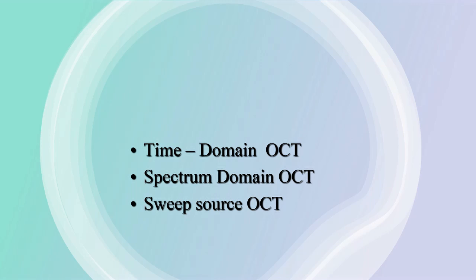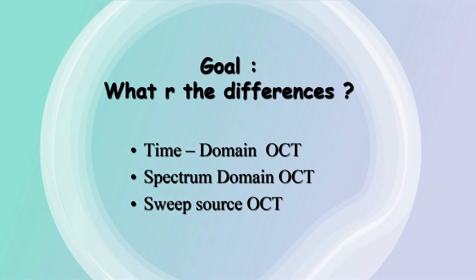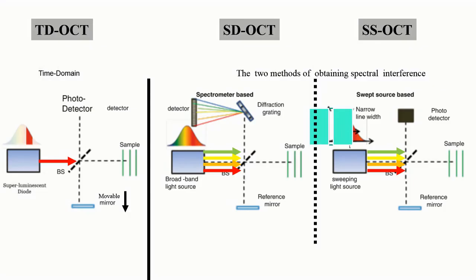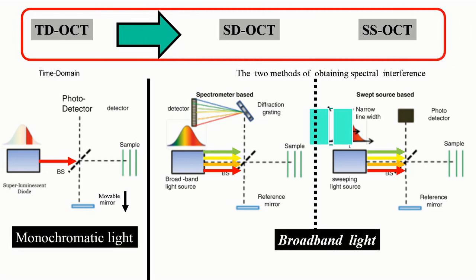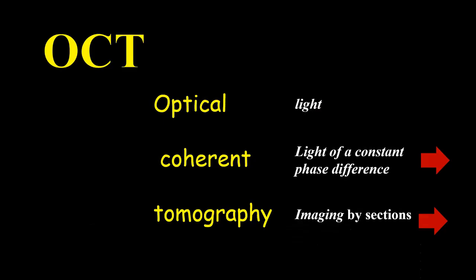OCT started as a time domain modality. More recently we have the spectral domain and the swept source. The goal of this talk is to explain the difference between these different modalities. In time domain we use a monochromatic light, while the other two use a broadband light. OCT is an abbreviation for optical coherence tomography.